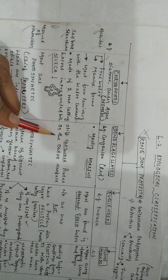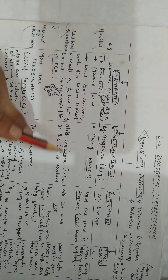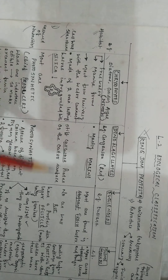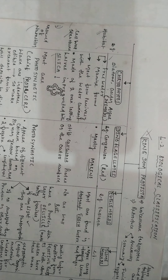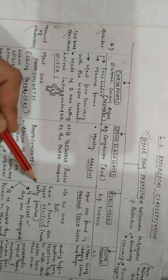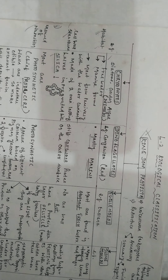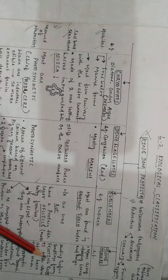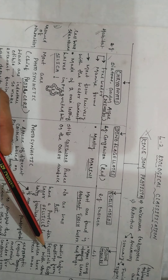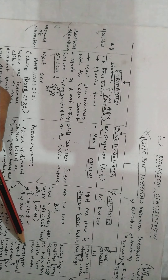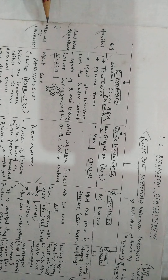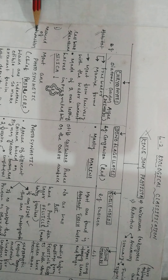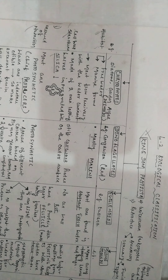Dinoflagellates have stiff cellulose plates on the outer surface. Euglenoids have no cell wall but have a proteinaceous structure called a pellicle, which makes the body flexible. Slime molds form a fruiting body with spores during unfavorable conditions, and they have true walls.